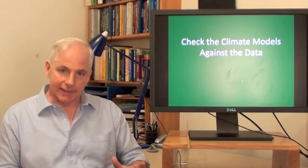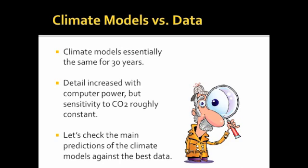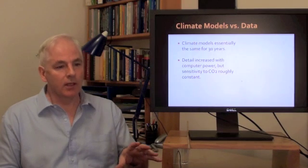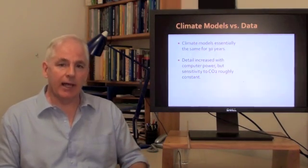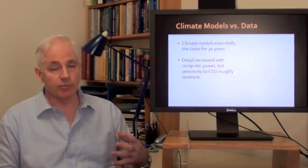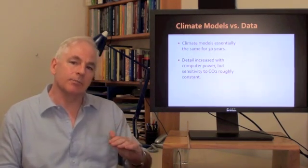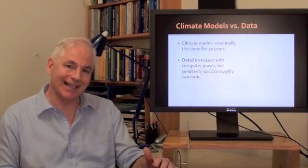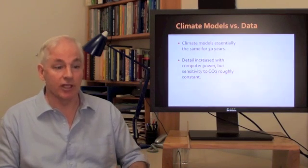Let's check the climate models against the data. The climate models have been essentially the same now for 30 years. They follow the same back of the envelope calculation and they get much the same result. Sure, in the last 30 years there's been huge advances in computer power and the models do a lot more detailed calculation. But their sensitivity to CO2 has remained roughly constant through the last three decades. So it's fair to compare the predictions that were made two or three decades ago with what's happened subsequently, because the climate models haven't really changed.